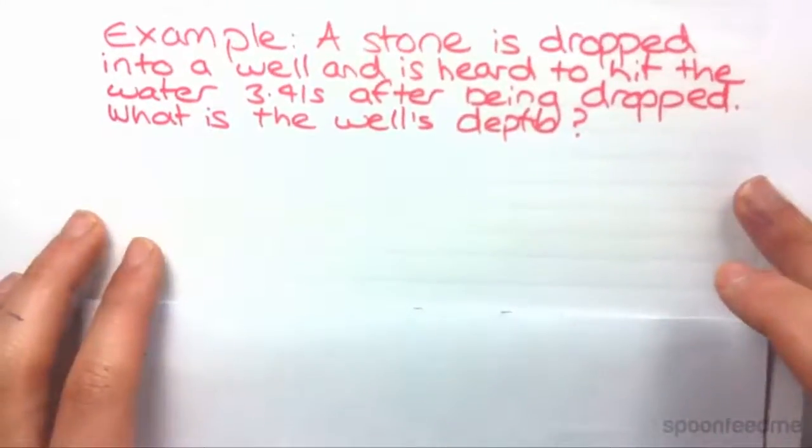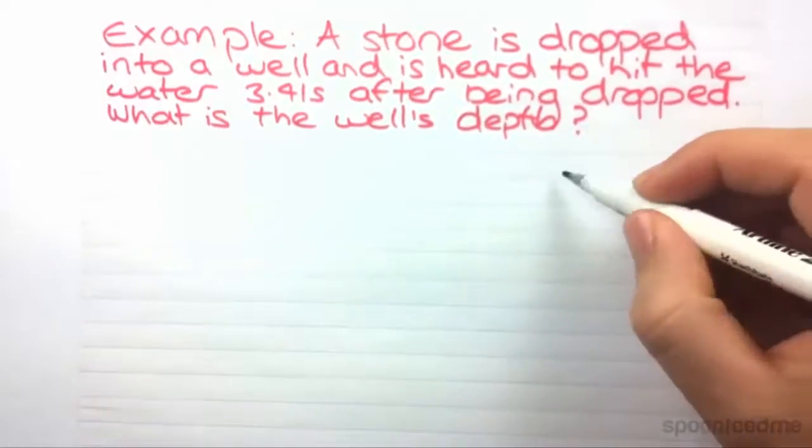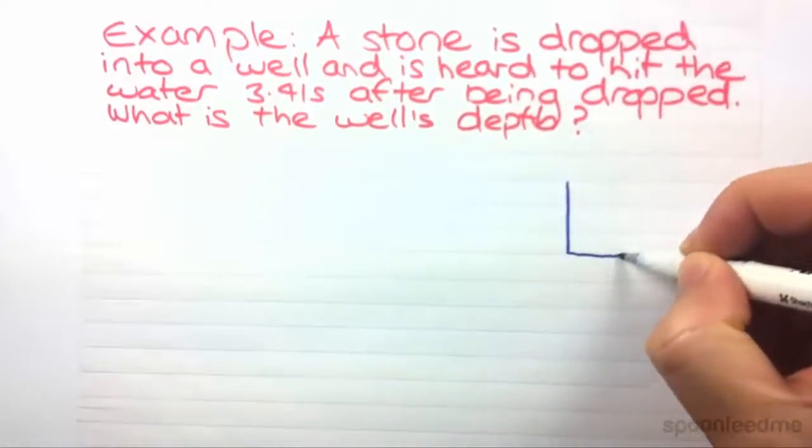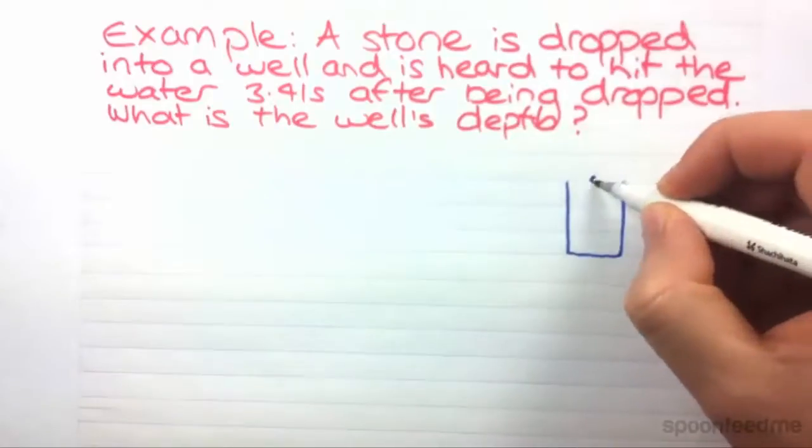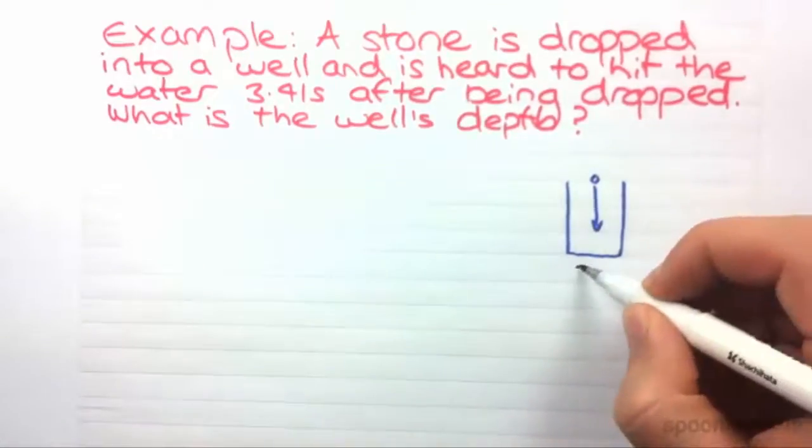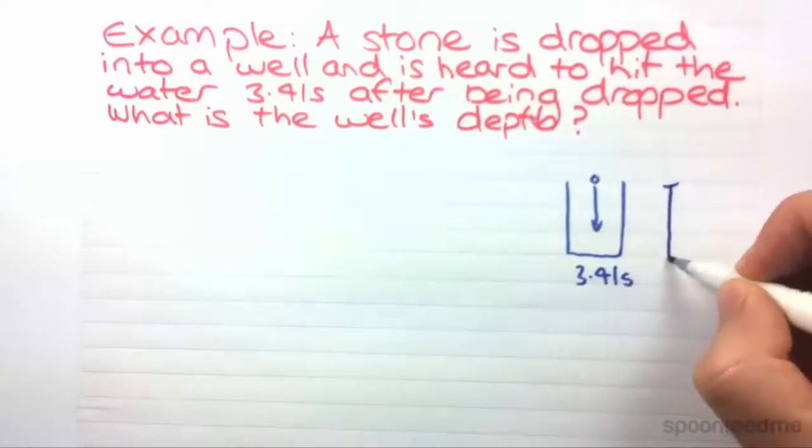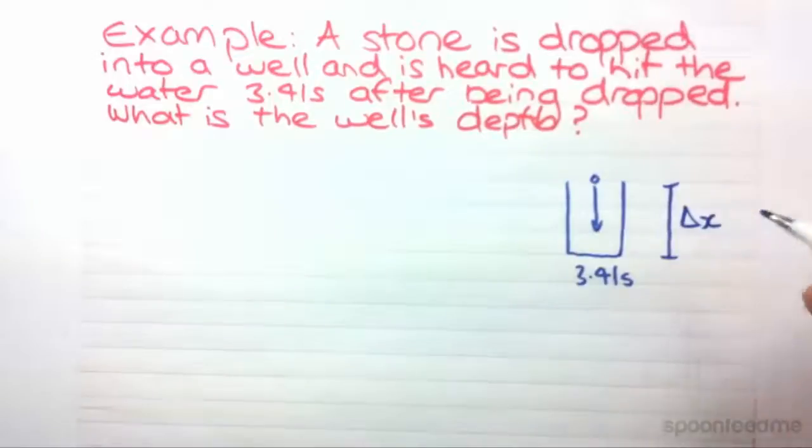Alright, a stone has dropped into a well and heard to hit the water 3.41 seconds after being dropped. What is the well's depth? This is a classic kinematic question and what I'm going to do to start is actually draw a diagram. So there's the well. Stone is dropped and it takes 3.41 seconds and we need to find this distance.